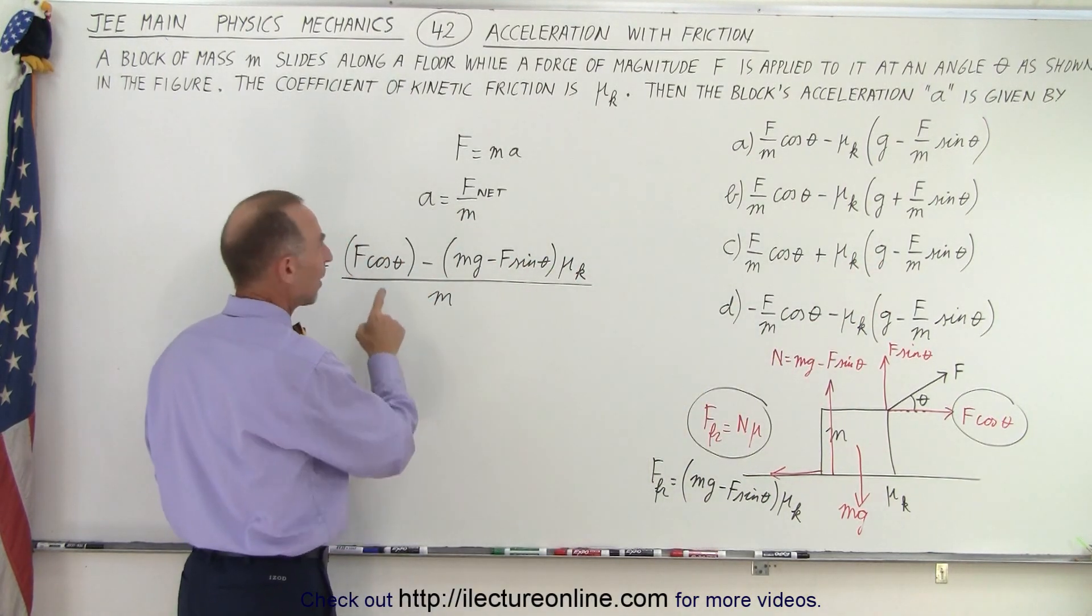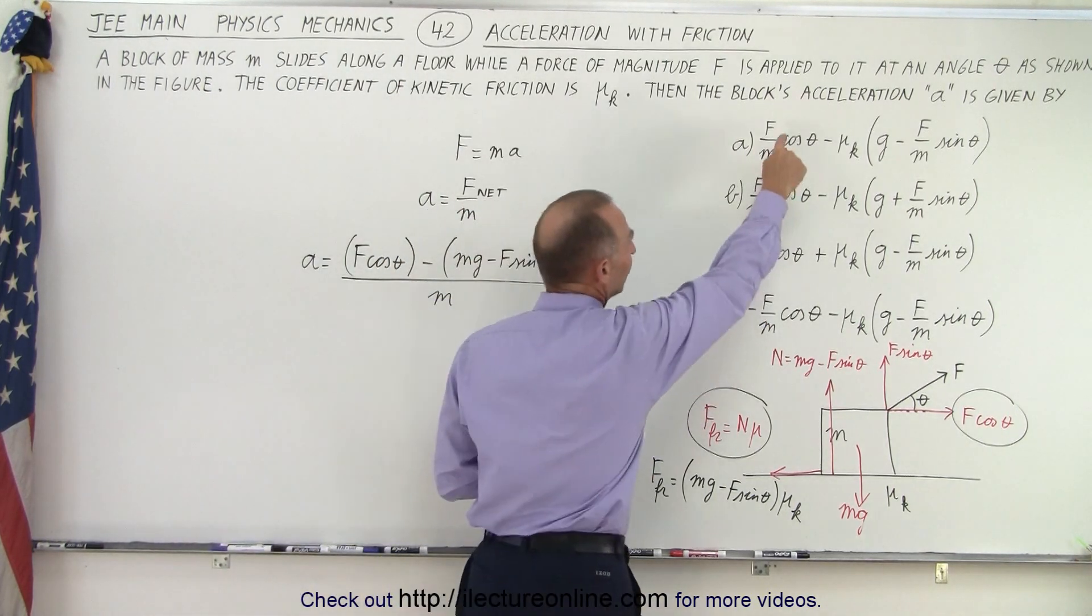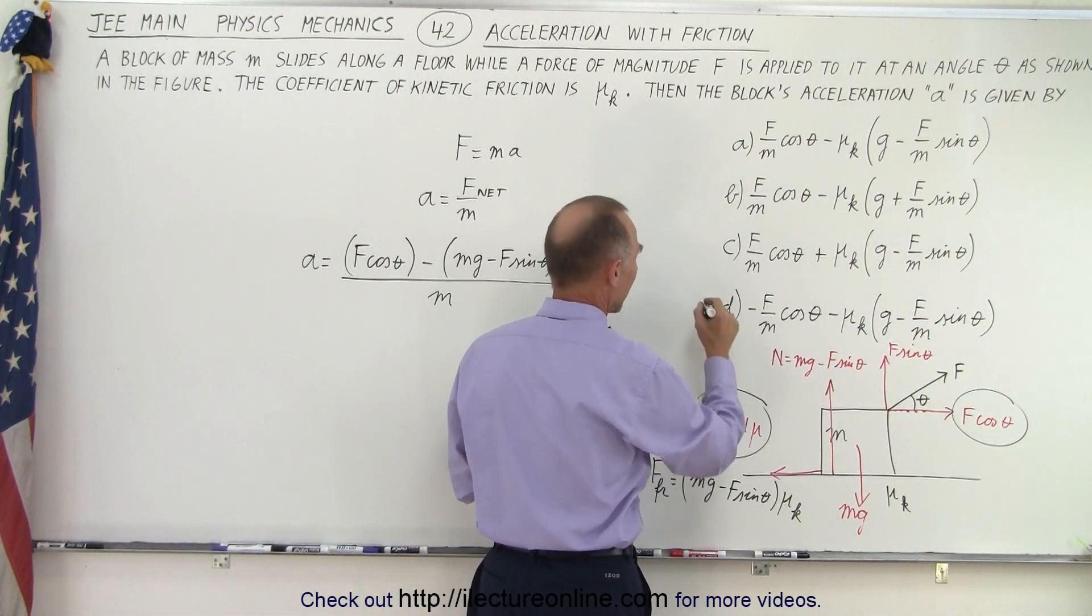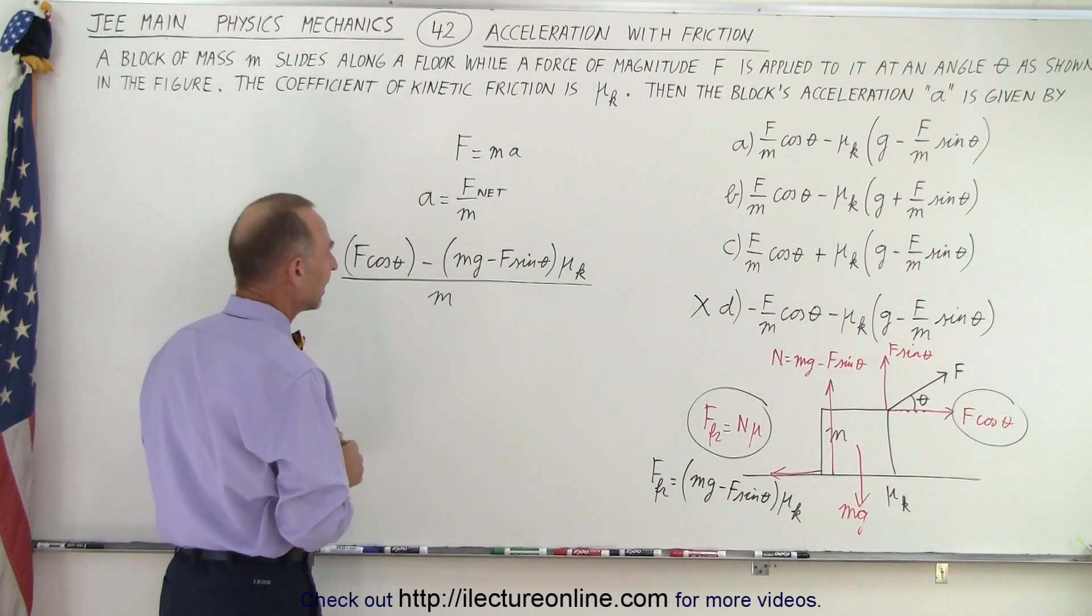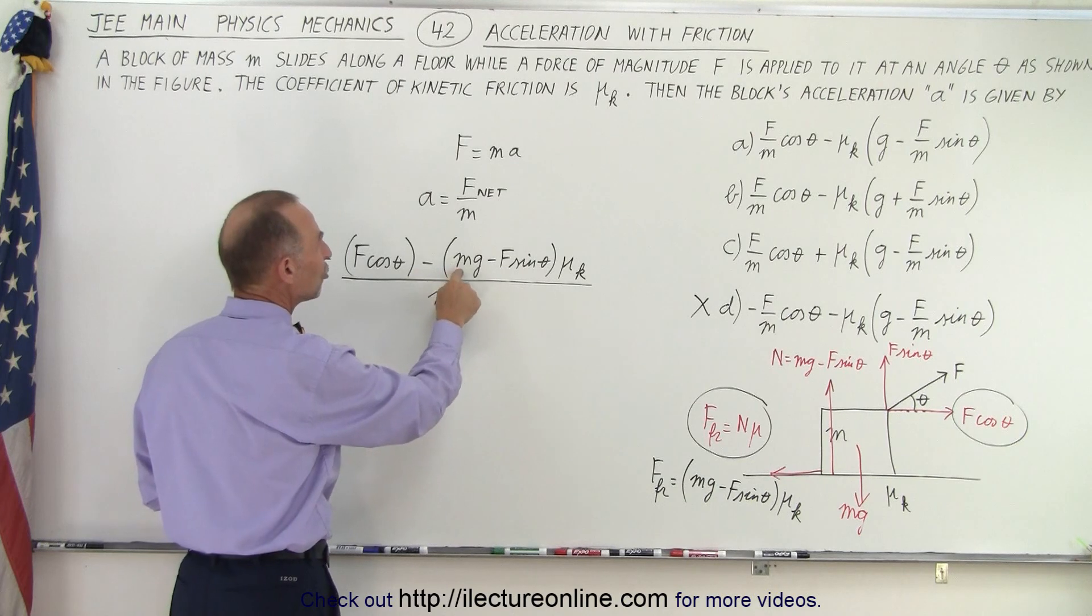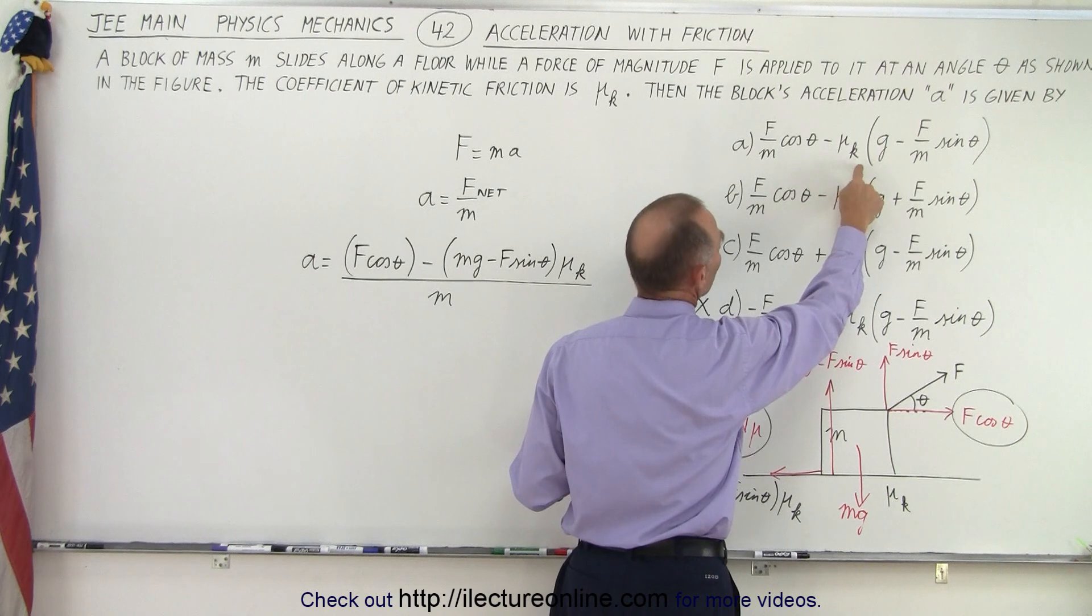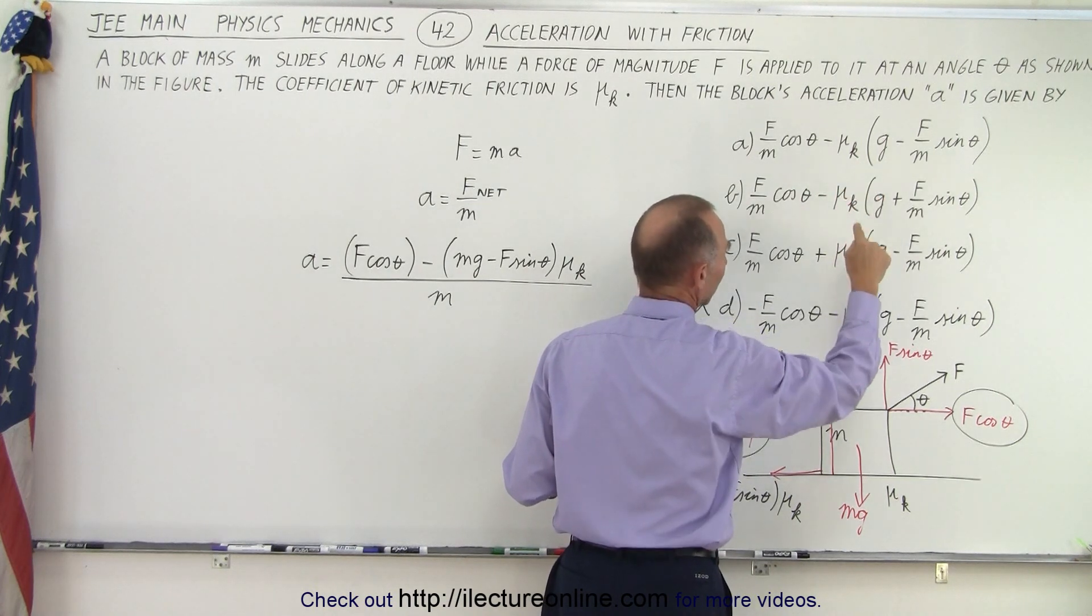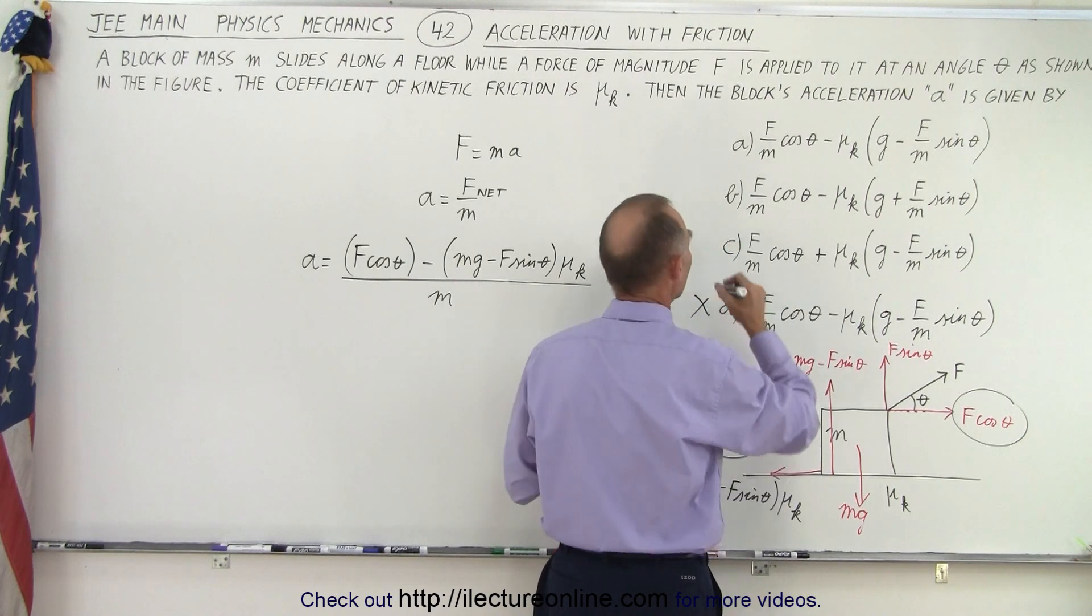But look at the signs. So we have an F cosine θ, that means that these three are still possible but this one is not because that's a negative F over m cosine θ. And then we have a minus mg μ_k over m, a minus mg μ_k—a minus mg, that's a plus mg μ_k, so it cannot be this one.